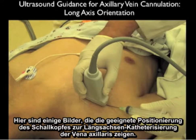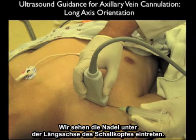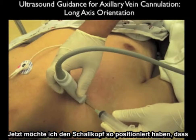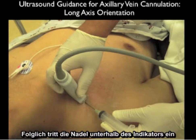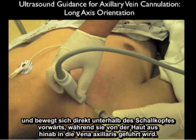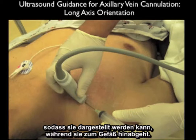Here are images showing the appropriate probe positioning for long axis cannulation of the axillary vein. We have the high frequency linear array probe positioned over the lateral chest wall directly over the axillary vein, with the needle coming in under the long axis of the probe. The probe marker is oriented lateral so the needle comes in underneath the indicator and progresses directly under the probe from skin to axillary vein. It is important to keep the needle in-plane underneath the probe at all times so it can be visualized as it approaches the vessel.